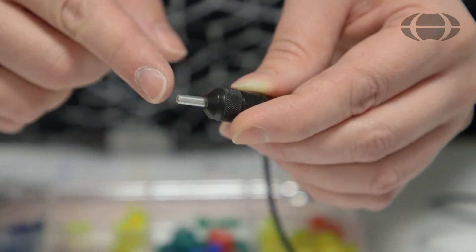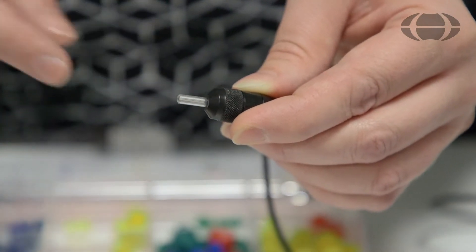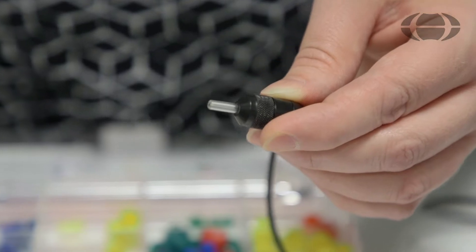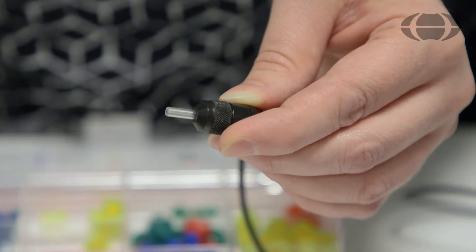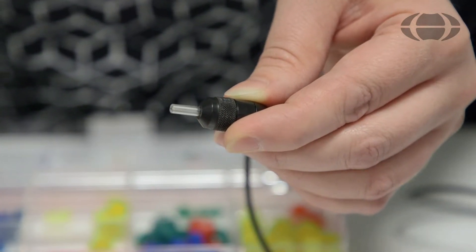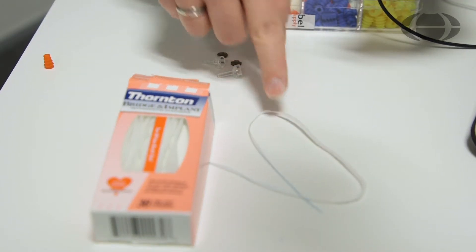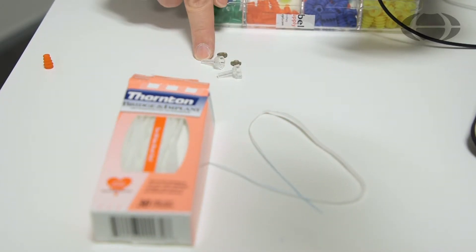It can be common for wax or debris to get into the probe tip here. This is especially true when testing newborns that have wet ears. Therefore, you have some cleaning floss to clean the probe tip with and also some spare probe tips to exchange if needed.